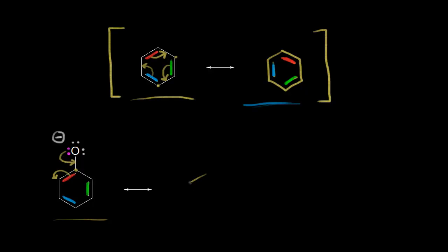Let's draw that resonance structure. We have our ring, and now a double bond between the oxygen and the carbon, with only two lone pairs of electrons on this oxygen. The electrons in magenta moved in to form a pi bond, and the electrons in red moved off onto this carbon, giving it a negative one formal charge. The electrons in blue and green have not moved yet, so we put those in.